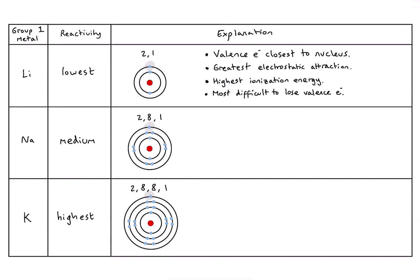Moving down to sodium, the valence electron is further away from the nucleus. And if an electron is further from the nucleus, it's going to feel a weaker electrostatic attraction to the nucleus, which means its ionization energy will be lower. And therefore, it's easier to lose that valence electron during a reaction.